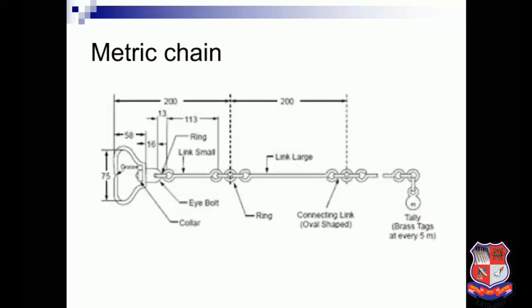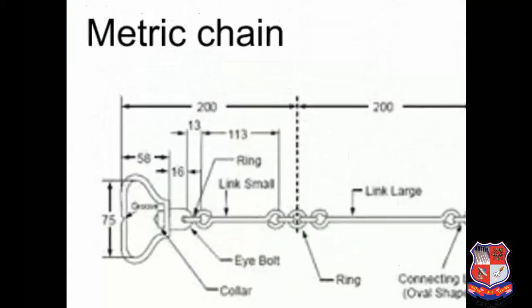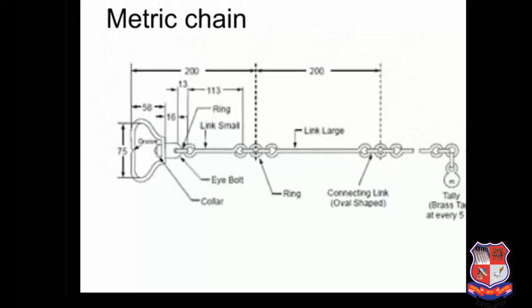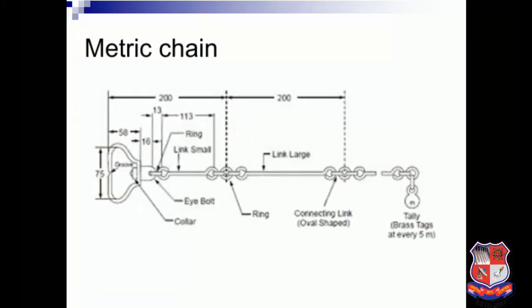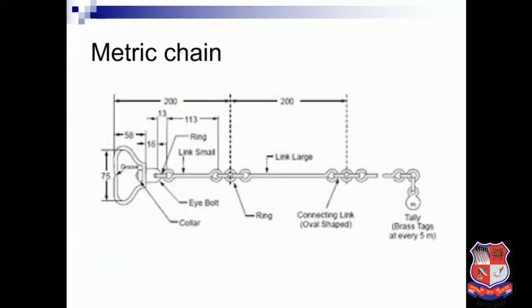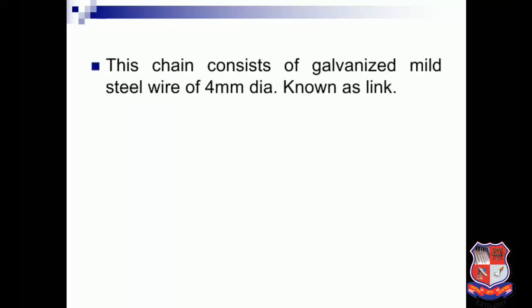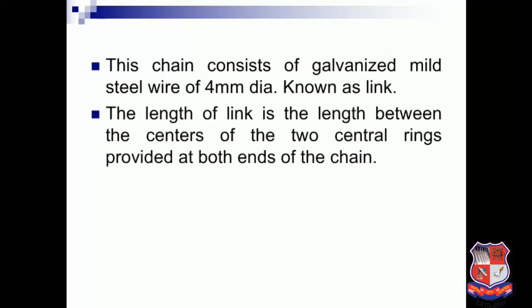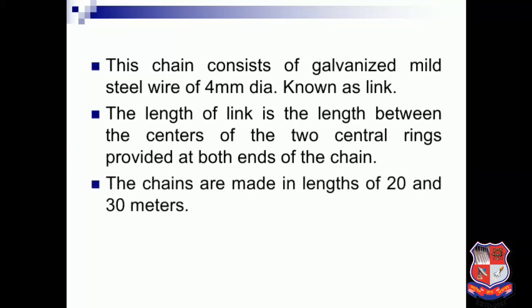The metric chain consists of galvanized mild steel wire of 4 mm diameter, known as a link. The length of a link is the distance between the centers of the two central rings provided at the ends of the chain. Chains are made in lengths of 20 and 30 meters.